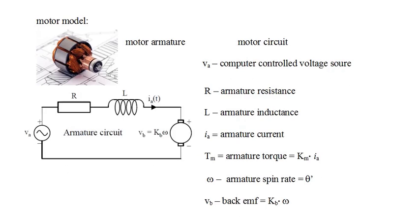The model for the motor electric circuit is shown. The robot's computer controls the input voltage V_A, which in turn drives current through the armature winding. The resistor R represents the armature resistance, and the inductor L represents the armature inductance. Current through the armature winding is represented by I_A. It creates a torque on the rotor, T_M, where T_M equals the motor torque constant K_M times I_A, the armature current.